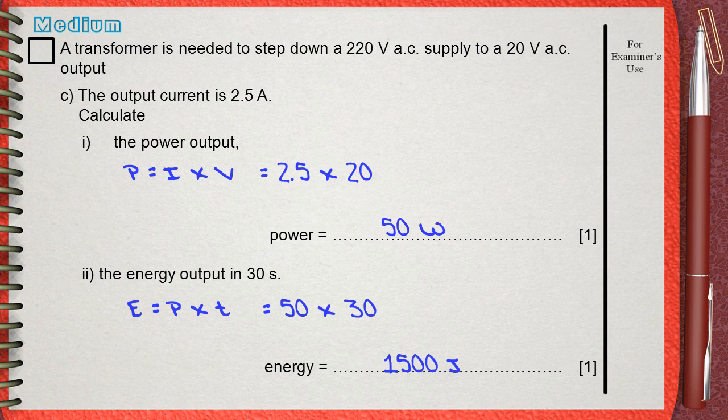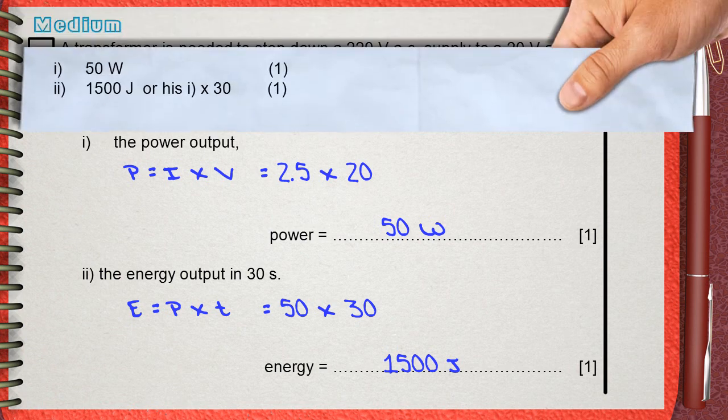This question is considered to be direct and nothing to think about. Just to memorize the rules of electric current. The mark scheme gives 2 marks for 50 watts or 1500 Joules. Also there is an error carried forward chance here. He gives you the mark for your answer in part i multiplied by 30.